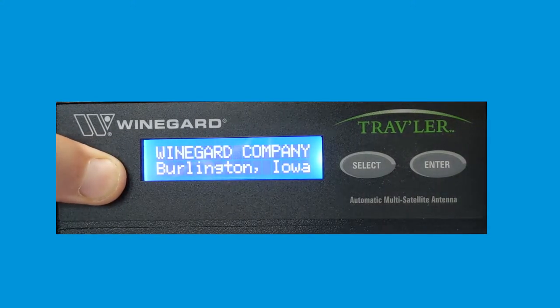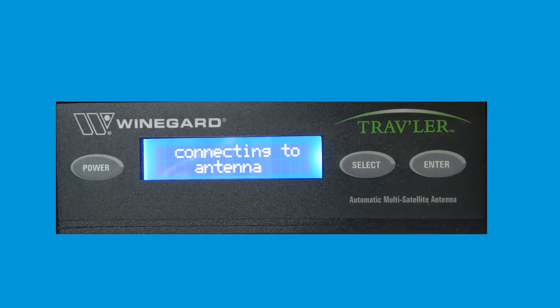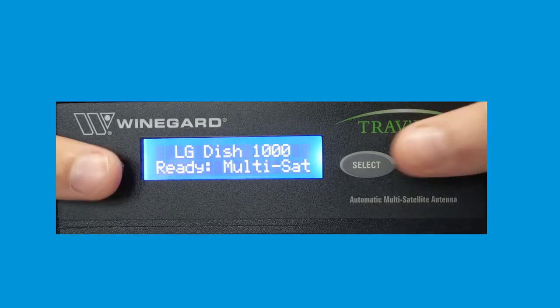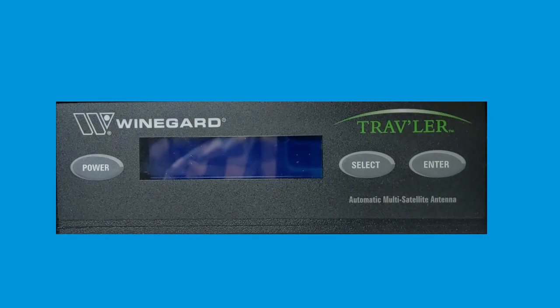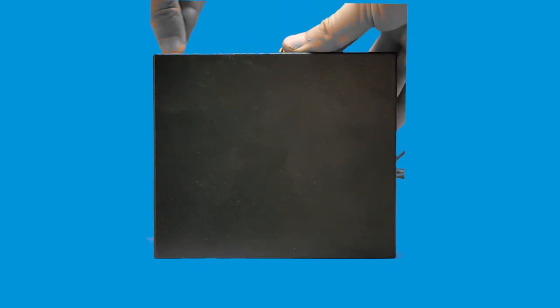Press power on the interface box to power the system on. Once it raises up off the roof so the arm is at least parallel to the roof, press and hold power and select at the same time to power the box off. Now unplug the power cable from the back of the interface box.